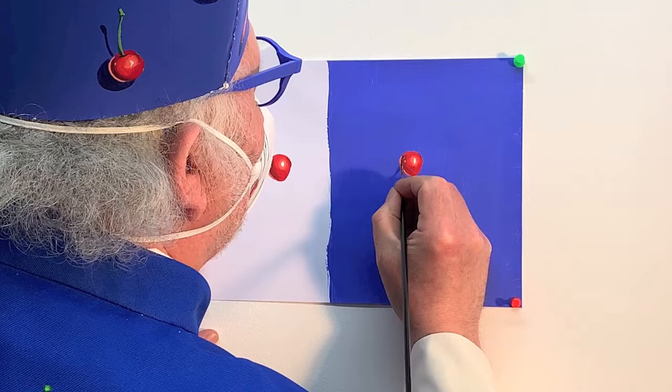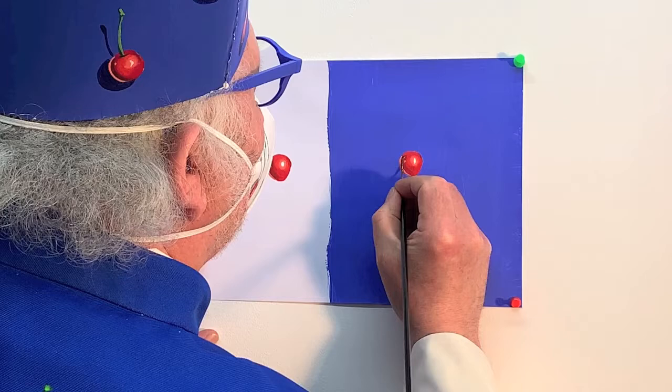Okay, now you trace a fine line of dark brown right next to the pink here.